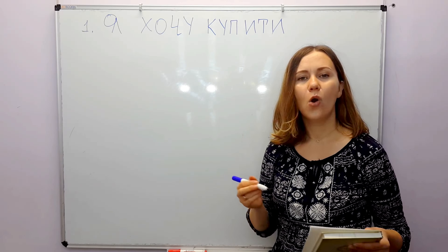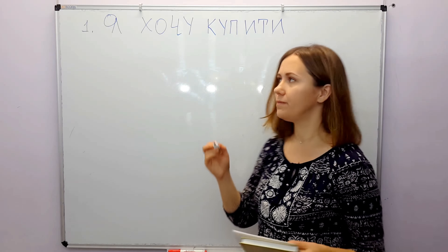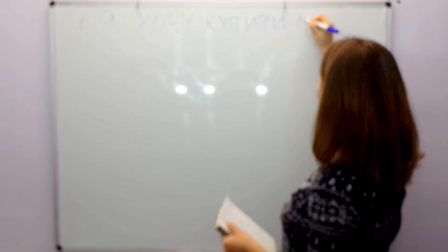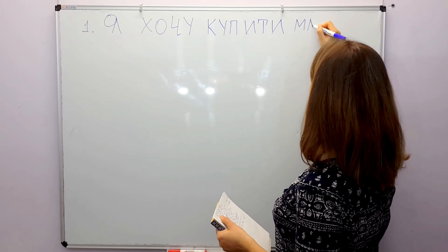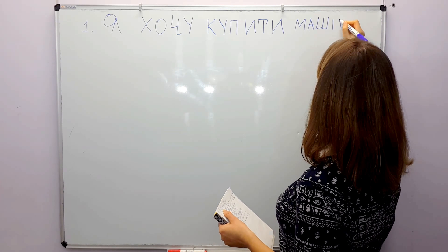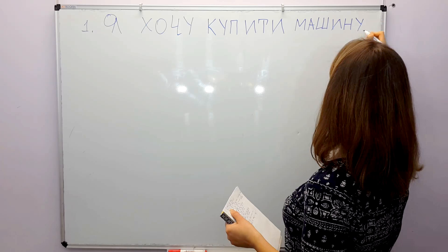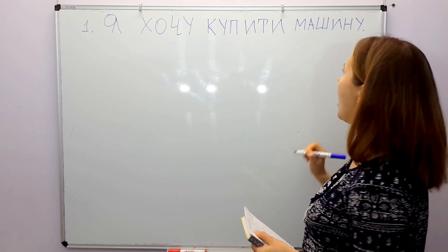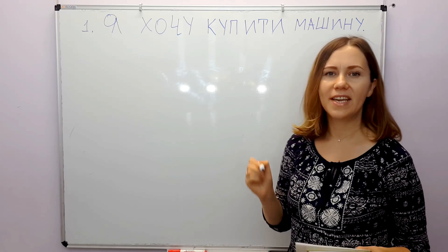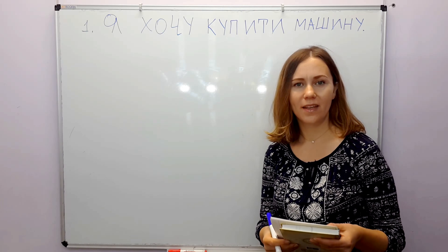Я хочу купити машину — a car. Машину: Ма-ши-ну. I want to buy a car — Я хочу купити машину.